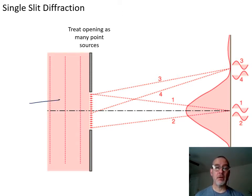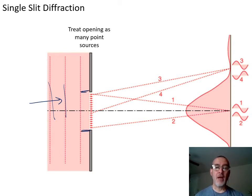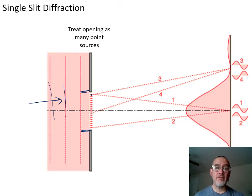In single-slit diffraction, what we have is light coming along as plane waves, so we've already got them in straight lines coming in. But when that wave hits the single-slit — in this case I have an opening here — we're going to use a concept called Huygens' Principle. Huygens' Principle says that every individual point on the wavefront acts like its own point source.